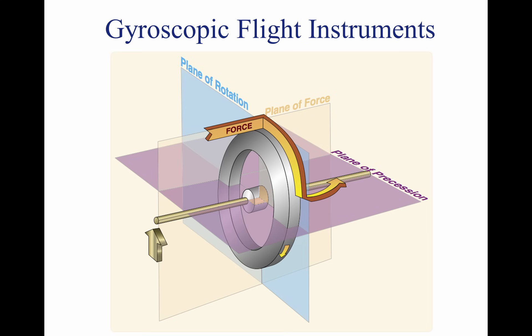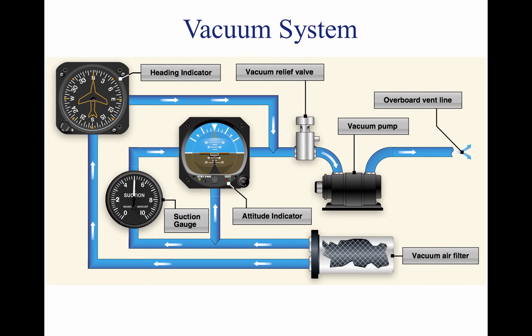Precession can also create some minor errors in some instruments. Precession can cause a freely spinning gyro to become displaced from its intended planar rotation through bearing friction. Certain instruments may require corrective realignment during flight, such as the heading indicator. In some aircraft, all of the gyros are vacuum, pressure, or electrically operated. In other aircraft, vacuum or pressure systems provide the power for the heading and attitude indicators, while the electrical system provides the power for the turn coordinator.